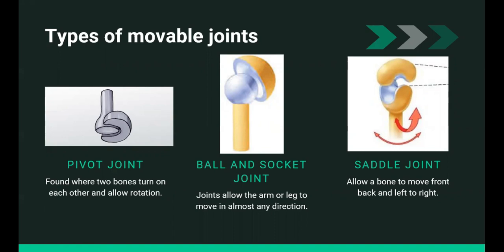Next is the ball and socket joint, which allows the arm or leg to move in almost any direction. The knob-like end of an arm or thigh bone fits into a bony cup in the shoulder blade or hip bone. Then we have saddle joints.